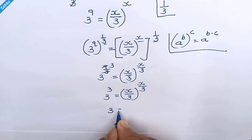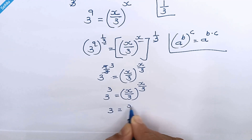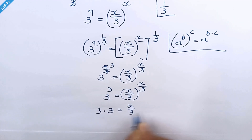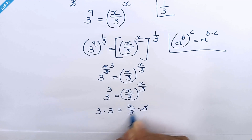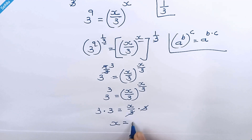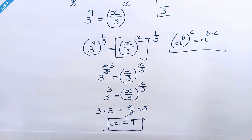So it will be 3 is equal to x over 3. Multiplying both sides by 3, these cancel out, and we have x is equal to 9. And this is our answer.